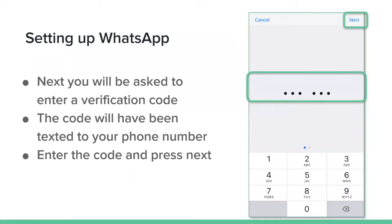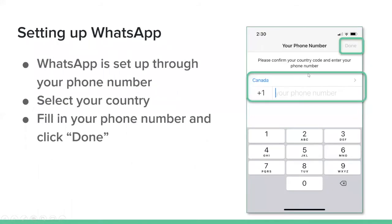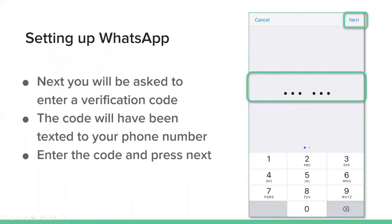You will be asked to enter a verification code that you'll get as a text message on your phone. Because you entered your phone number on the previous screen, it's going to send you a code to make sure you're you — this is a security verification code. As soon as you hit done, you're going to get a message on your mobile phone with a six-digit number. Open it up, check the code, enter it using the keypad below, and then click next.